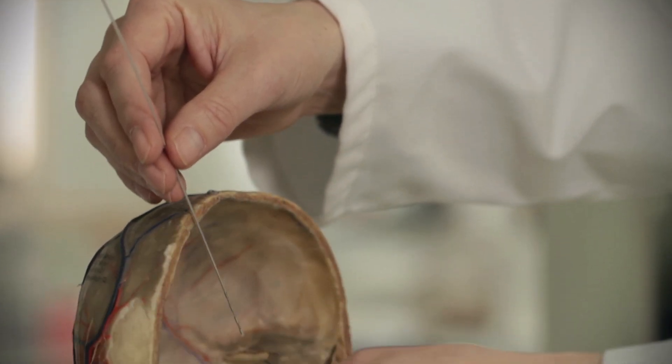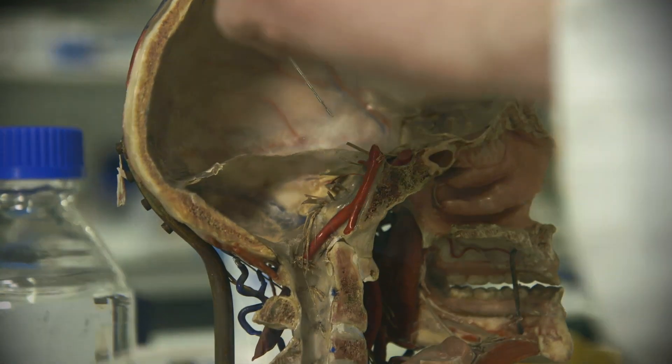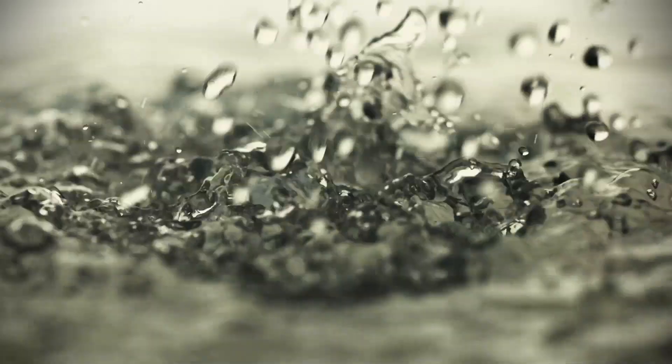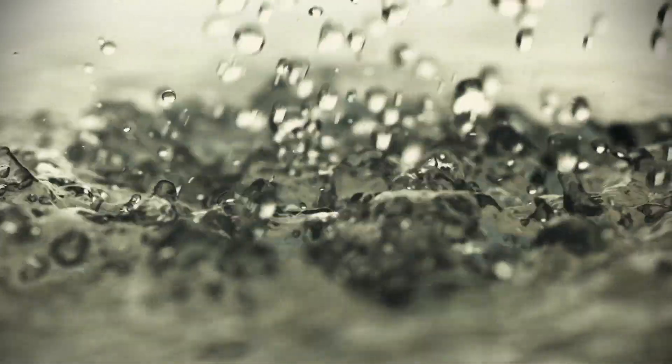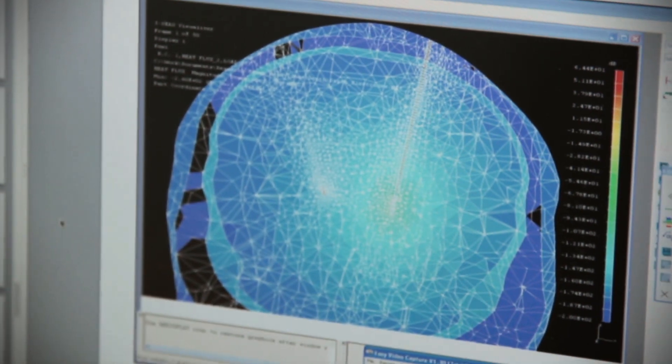The problem with DBS at the moment is that the field is fired in all directions, so although you might rectify the tremor, you might cause memory loss, you might cause depression, you might cause other side effects. We want to point it in the right direction, so we model the actual brain and the regions that the field of activation is going in.